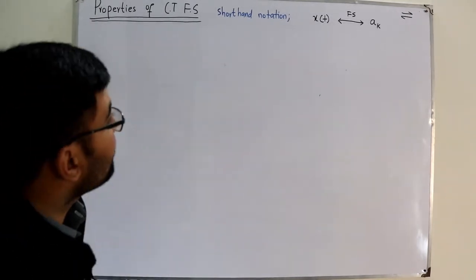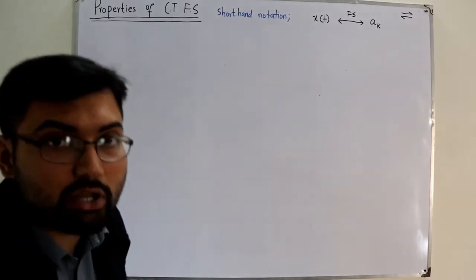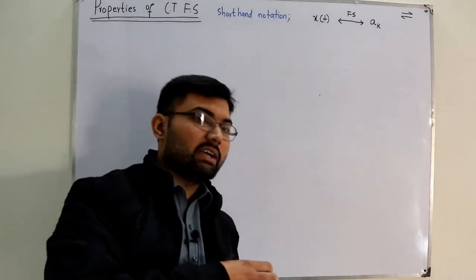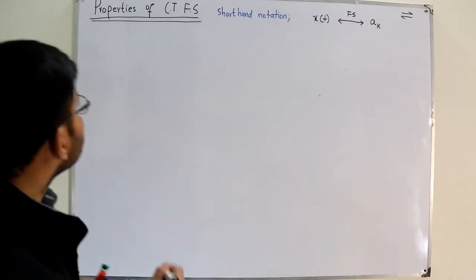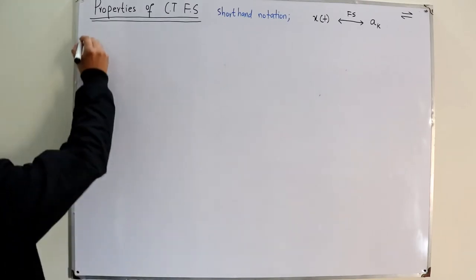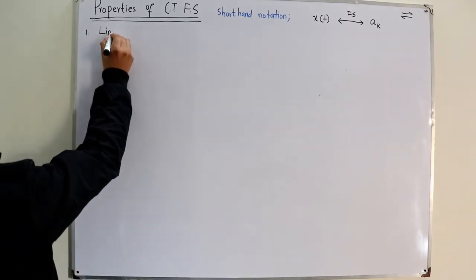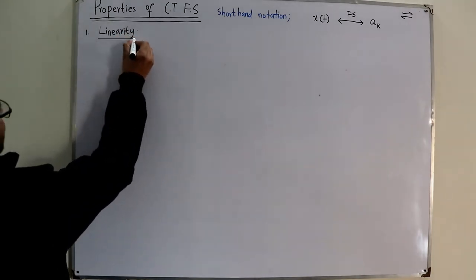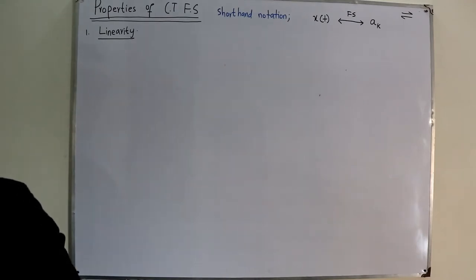There are basically 10 to 12 properties in total. I will divide this into two parts: the first five in this video and the next five in the next video. Number one is the property of linearity.